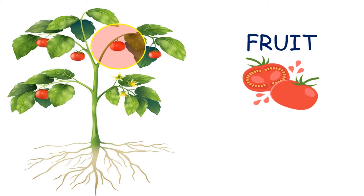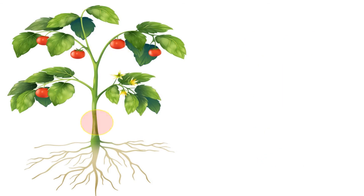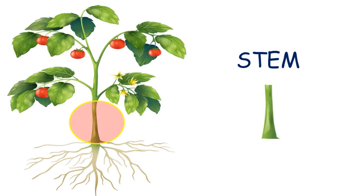Fruits are the parts of a plant that protect seeds and help the seed get moved from place to place by an animal. Seeds are inside the fruits. The life of a plant begins from the tiny seed.